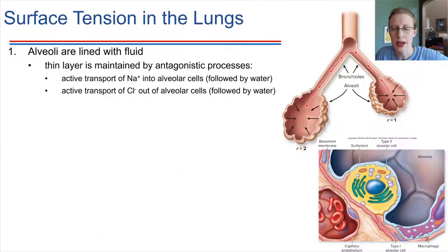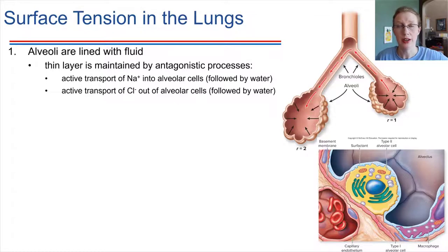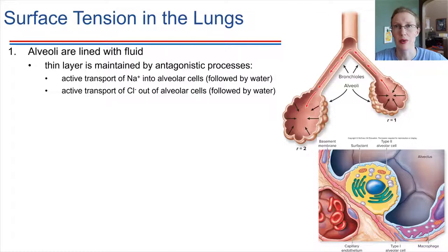Those alveoli in the respiratory zone are the sites where gas exchange happens, but they don't just house gas — they're actually lined with fluid. This is true for all alveoli. If they're healthy, they have a fluid lining, and that layer of fluid is maintained by the type 2 alveolar cells. They have two antagonistic mechanisms to allow them to control fluid in both directions.